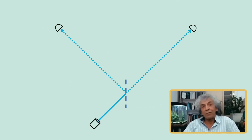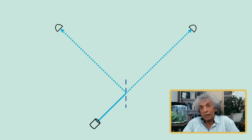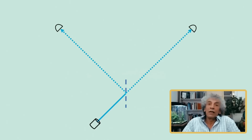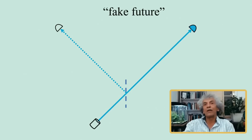You remember this: I send the particle to a beam splitter and now I have two detectors — it's a dashed line. I have two futures and I don't know which of them is correct. One of them is going to materialize and the other is not. It's one particle, so either the right-hand detector is going to click and the other remains silent, or vice versa. And then I wait and this one clicks. I'm going to call the right side the real future and the left side the fake future.